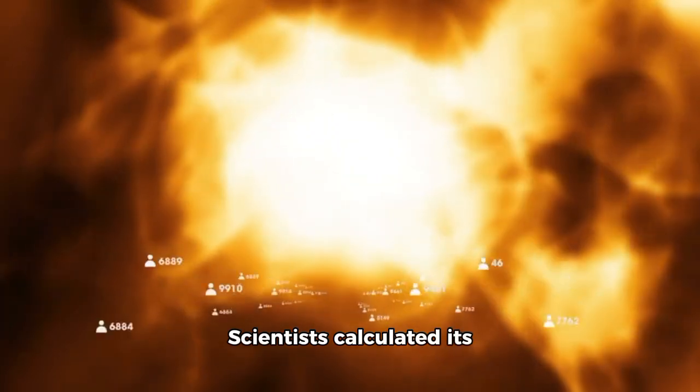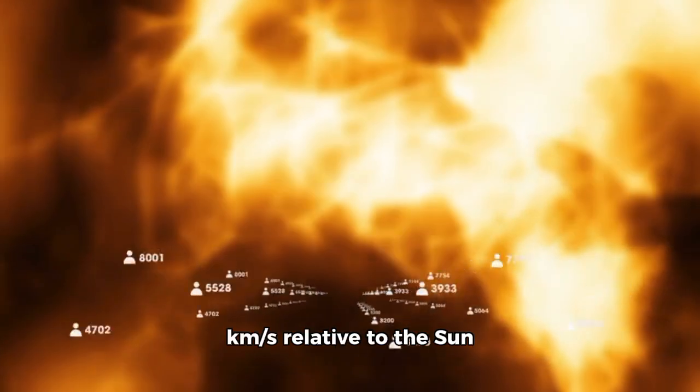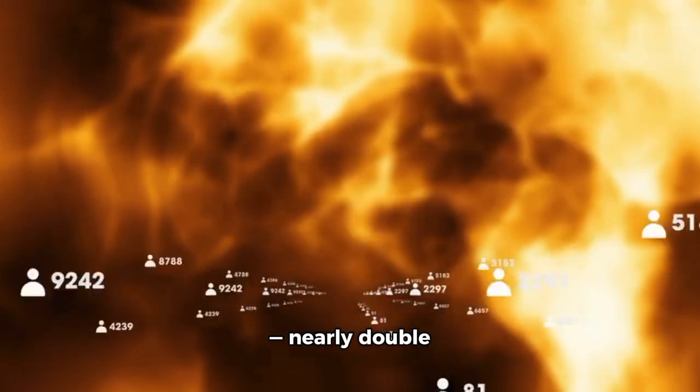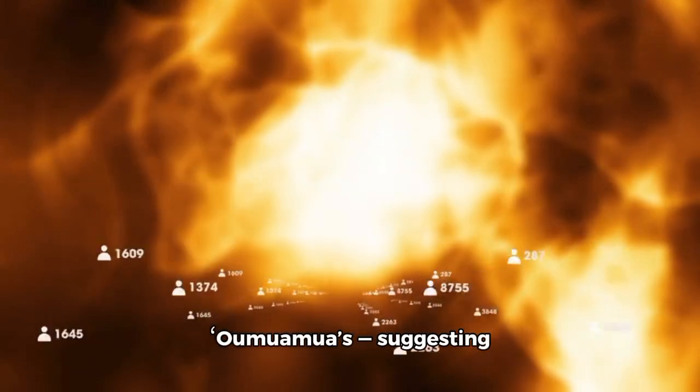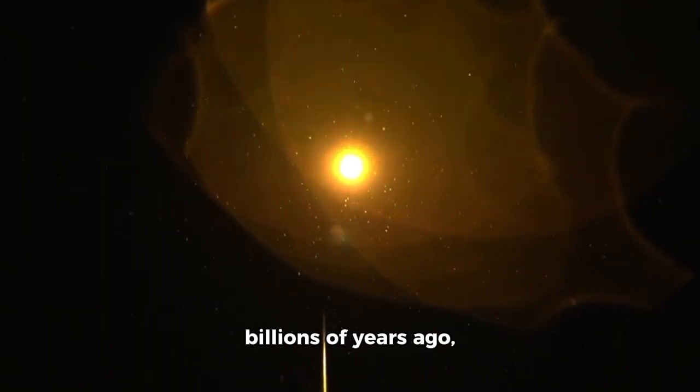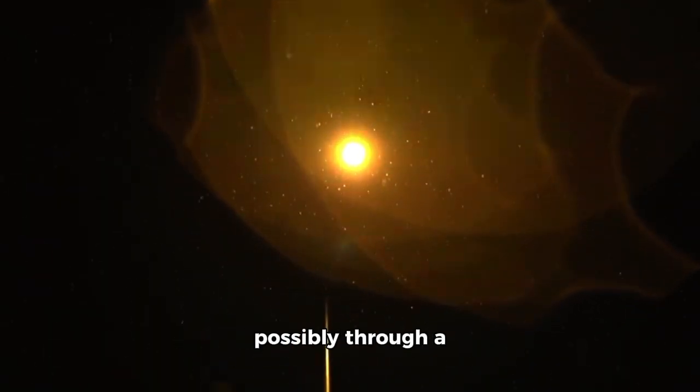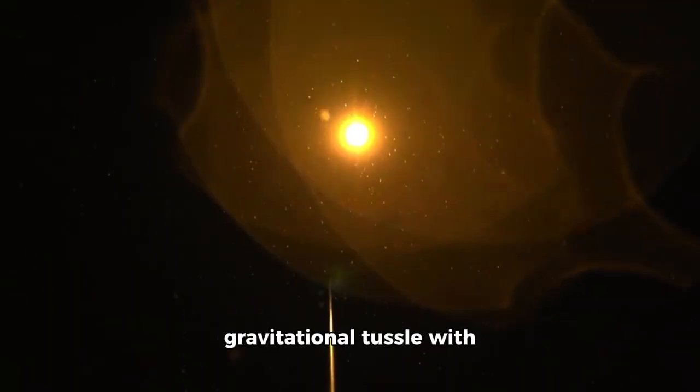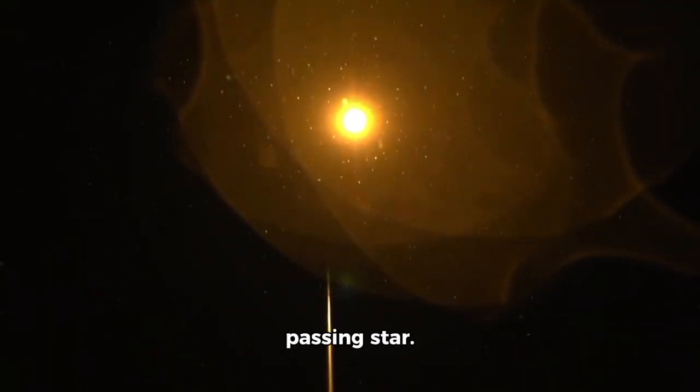Scientists calculated its speed at approximately 50 kilometers per second relative to the sun, nearly double Oumuamua's, suggesting it was ejected from its home system, perhaps billions of years ago, possibly through a gravitational tussle with a giant planet or a passing star.